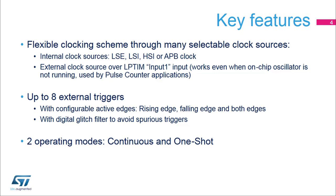The Low Power Timer has a very flexible clocking scheme. It can be clocked from on-chip clock sources: LSE, LSI, HSI, or APB clock. Or it can be clocked from an external clock source over the Low Power Timer's Input-1 input.